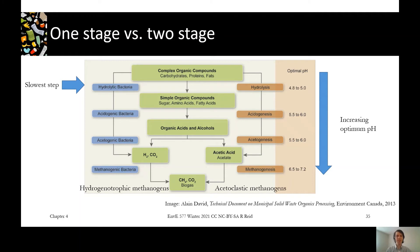The next step is methanogenesis, and there are two groups of methanogens. We've got our acetate, our hydrogen, and our CO2. Some methanogens can use the acetate — these are called acetoclastic methanogens. 'Clastic' means breaking, so they're breaking apart the acetate to make the biogas.